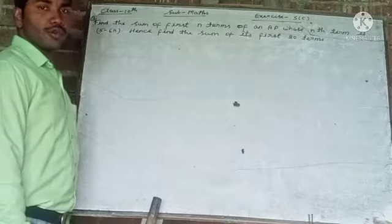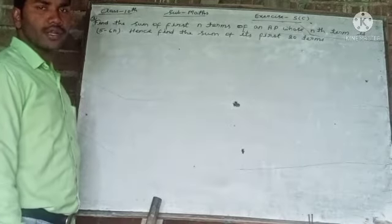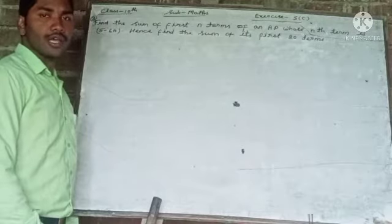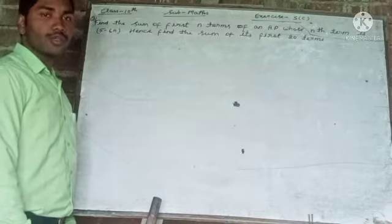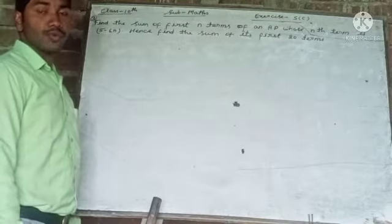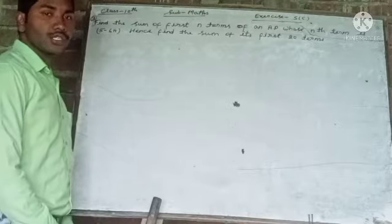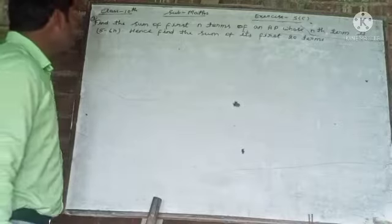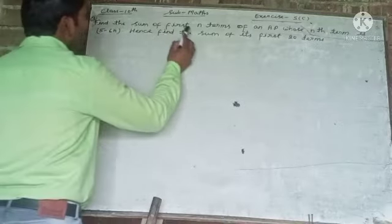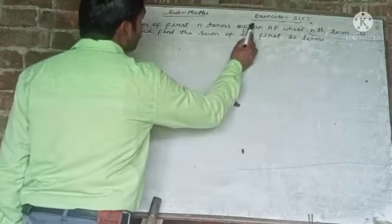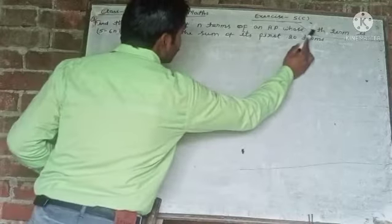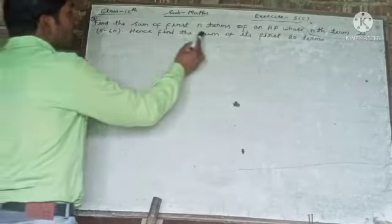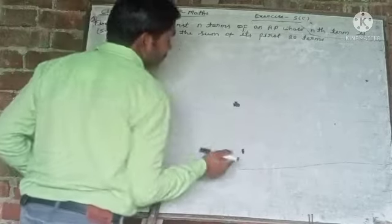In the previous video, we discussed how to find the sum of an arithmetic progression. In this video, we are also going to discuss the sum of an arithmetic progression, but this is a little bit different. The problem is: find the sum of first n terms of an AP whose nth term is 5 minus 6n. Hence, find the sum of its first 20 terms.